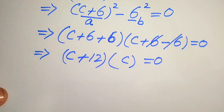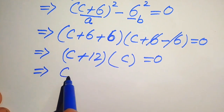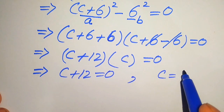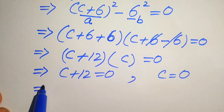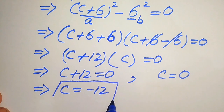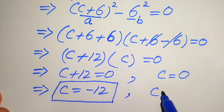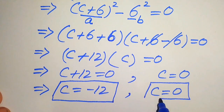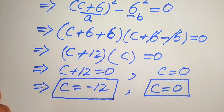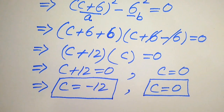We divide this into two cases: the first case is c + 12 = 0 and the second case is c = 0. From the first case we get c = −12, and from the second case c = 0. You can see that from both methods we get the same values of c, which is the final answer.